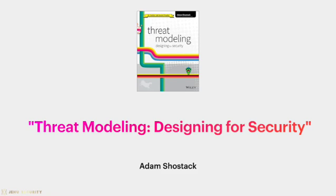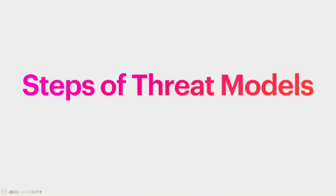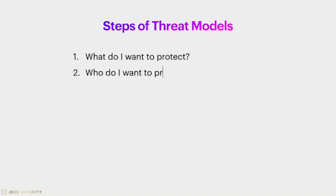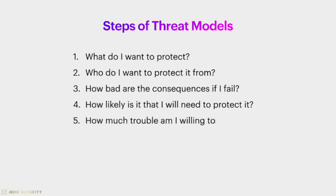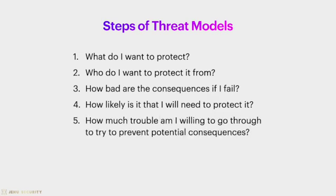In his book Threat Modeling: Designing for Security, Adam Shostak describes how, given the example of your own home, you would likely be able to craft a threat model easily. You would be able to list your valuables or sensitive assets, how someone might break into your house, and an idea of who might break in. This is threat modeling. However, we don't always think as easily about our digital lives and how we might build a threat model for that. There are five primary steps to threat modeling, largely taken from the EFF approach and from Adam Shostak, and these steps are posed as questions: What do I want to protect? Who do I want to protect it from? How bad are the consequences if I fail? How likely is it that I will need to protect it? And how much trouble am I willing to go through to prevent potential consequences?